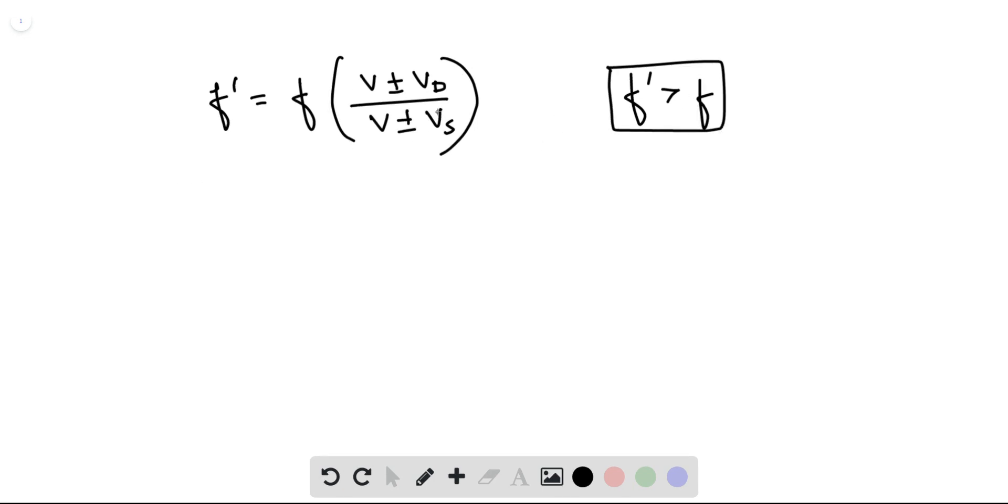Based on this, we will choose our signs so this relation is satisfied when we have a greater value on the numerator, so we choose plus, and a smaller value on the denominator, so we choose minus. Now this is the equation that we will be using to find velocity of the source.